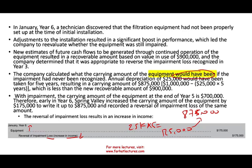That is impairment of assets under IFRS. For US GAAP coverage, please go to my intermediate accounting course. If you visit my website for additional lectures, please consider donating. Good luck and study hard for your CPA exam — this topic is covered on the exam.